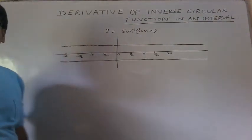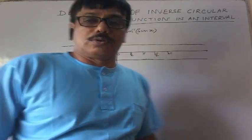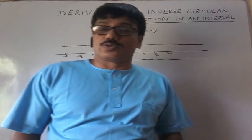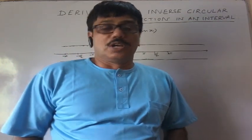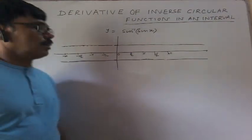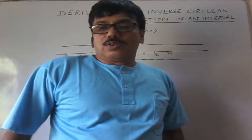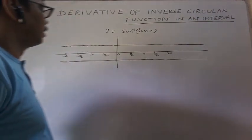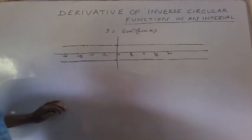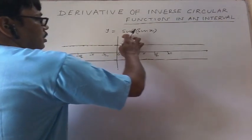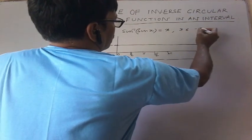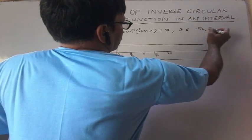The main idea: we know sin⁻¹(sin x) = x if x belongs to the principal value. What is the principal value of sin⁻¹(x)? It is [−π/2, +π/2]. So in this case sin⁻¹(sin x) = x when x belongs to [−π/2, +π/2]. But this is not equal to x in all cases.